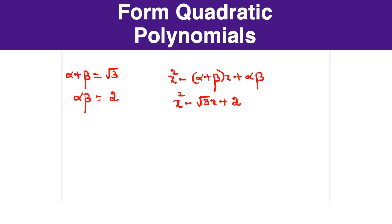In this video, given alpha plus beta and alpha beta values, we generated the quadratic polynomials. In the next video we will see how to find the zero of a polynomial and verify its relation with the coefficients.